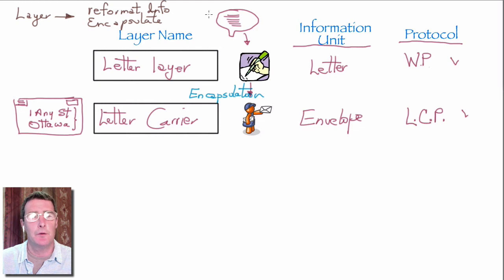Reformatting the information is what's done at our top layer here. We had some information that was in our head and we wanted to change that to a format where it's down on paper. We can now actually, because it's a thing, we can actually deliver it. At layer two, we're going to use the encapsulation so that the letter can actually start to get delivered.